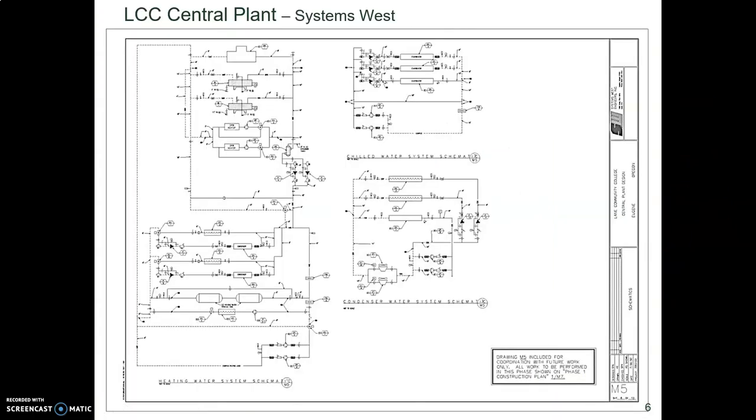I stuck this in just because it's interesting. This is from a company called Systems West in Eugene, and they do almost all of the mechanical systems for the LCC campus. So here is their schematic, and you can see it's kind of unusual looking. Their schematic showing the central plant that handles the heating and cooling in Building 12.